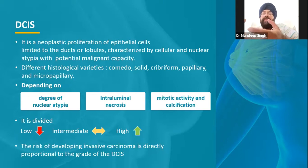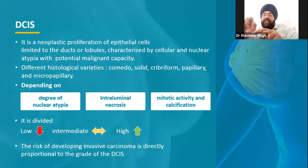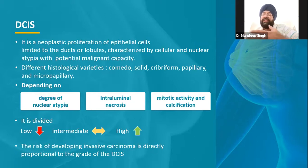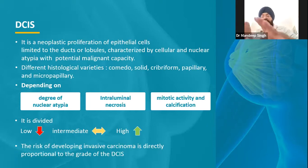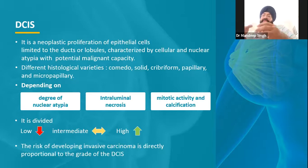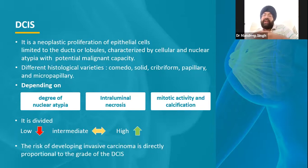We assess the nuclear grade by looking at nuclear features and cytoplasm under the microscope. The cell is composed of cytoplasm and a nucleus, and certain features tell us whether the cell has potential to spread. This is the degree of nuclear atypia. As cancer formation occurs, the central part of cells that don't receive blood supply or oxygen starts dying — this is necrosis. Comedo has more necrosis; cribriform has less. Then there is mitotic activity and calcification. These factors help us grade whether it's a low-grade, intermediate-grade, or high-grade in-situ cancer.